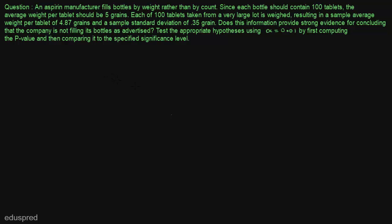An aspirin manufacturer fills bottles by weight rather than by count. Since each bottle should contain 100 tablets, the average weight per tablet should be 5 grains. Each of 100 tablets taken from a very large lot is weighed, resulting in a sample average weight per tablet of 4.87 grains and a sample standard deviation of 0.35 grain. This information provides strong evidence for concluding that the company is not filling its bottles as advertised. Test the appropriate hypothesis using alpha equal to 1% by first computing the p-value and then comparing it to the specified significance level.